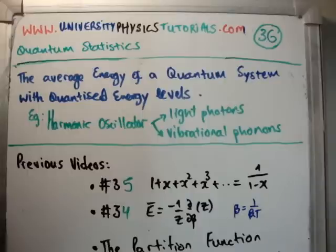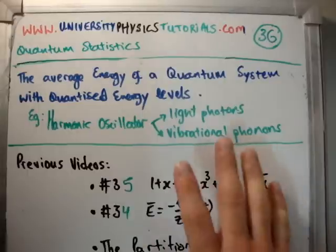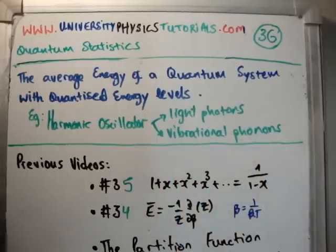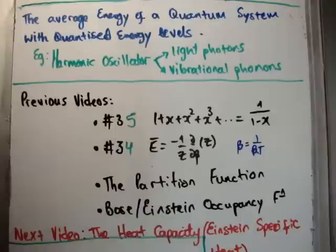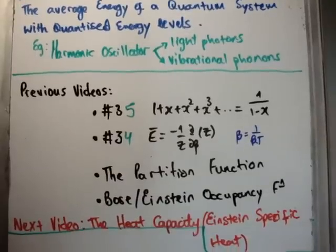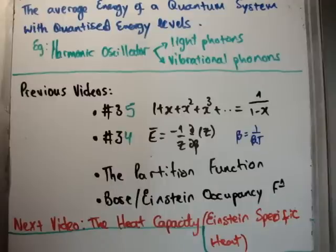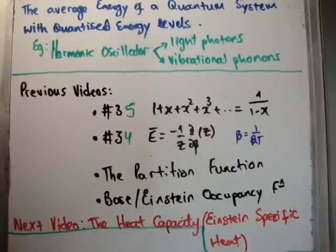This video will show you a quick way of finding the average energy of a photon and the average energy of a phonon, both of which obey Bose-Einstein statistics. From this we'll be able to get the Einstein heat capacity formula. In video 35 I showed the infinite power series 1 + x + x² ... which converges when x < 1 and equals 1/(1-x).